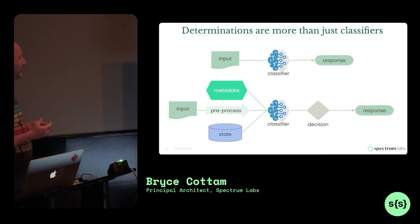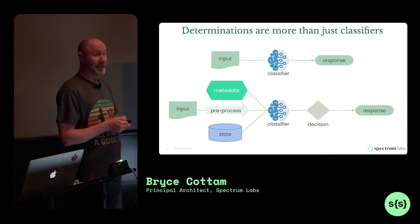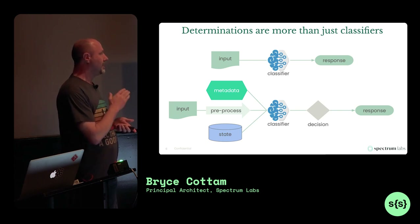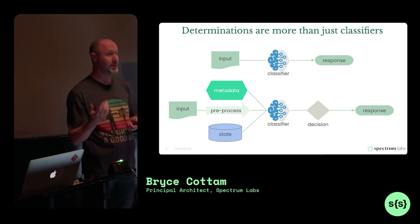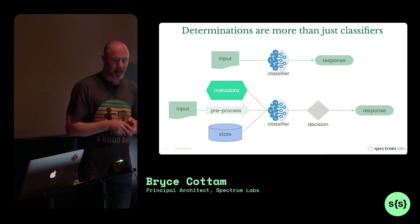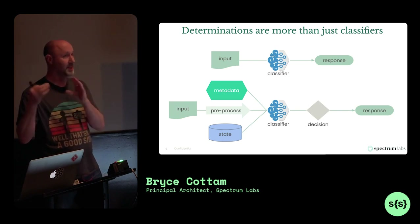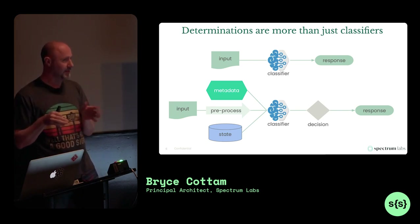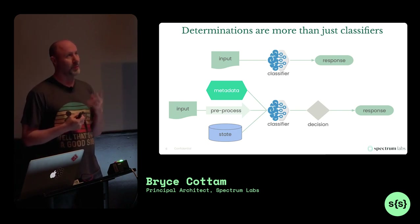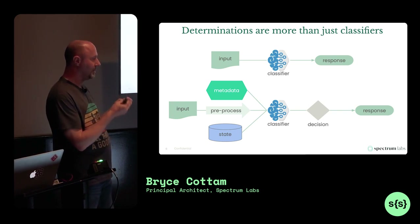Today we have about 20 distinct classifiers. Good engineers are lazy — they want to solve a problem once. Given three signal areas and freeform attributes, you might think there are 20 pieces of code to invoke each classifier, like a hate speech module that knows how to feed the hate speech classifier. There's not. There's essentially one place where we get the information to feed to a classifier — technically two, one for TensorFlow and one for ONIX, but essentially one.